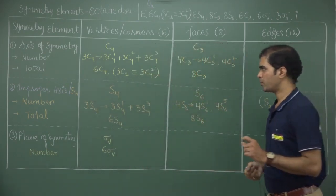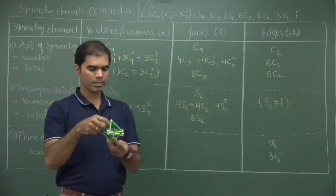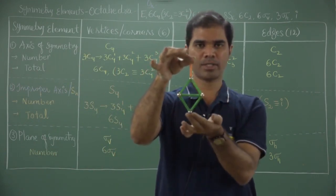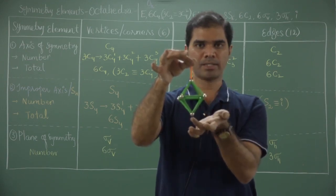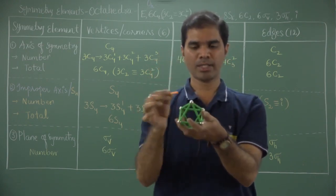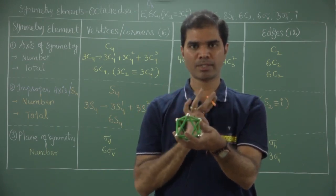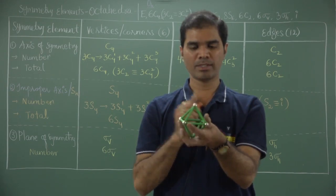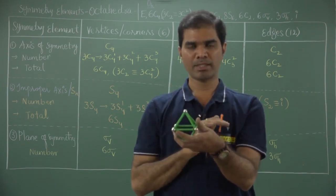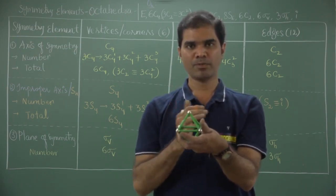To understand these symmetry elements, you first have to remember the polyhedron. In this octahedron, these are the vertices or corners — there are 6 vertices, and opposite every vertex is another vertex, so 6 vertices fall in 3 pairs. There are 8 triangular faces, and for each triangular face, opposite is another staggered triangular face, giving 4 pairs. There are 12 edges and for each edge, the opposite is a parallel edge, so 12 edges fall in 6 pairs.